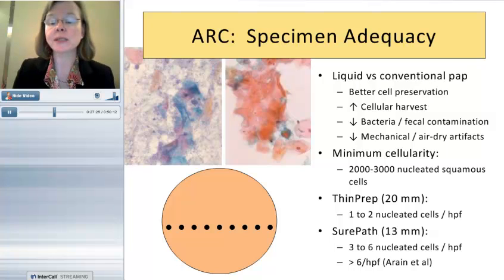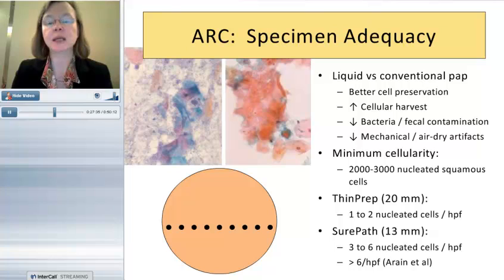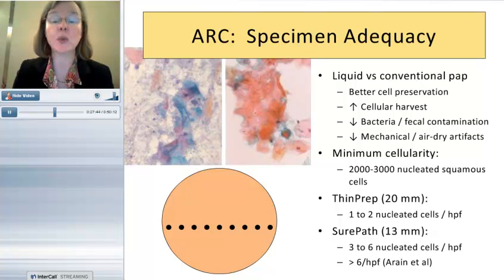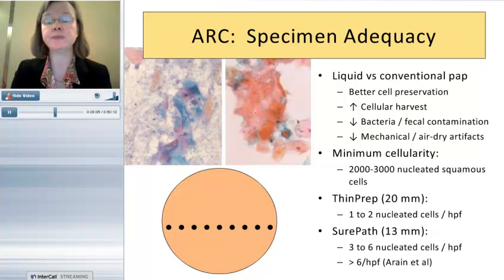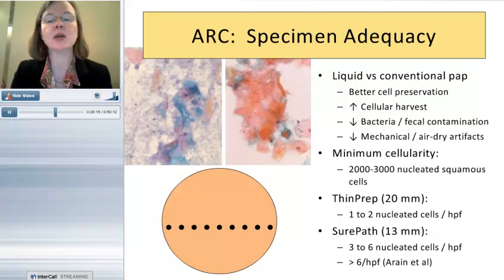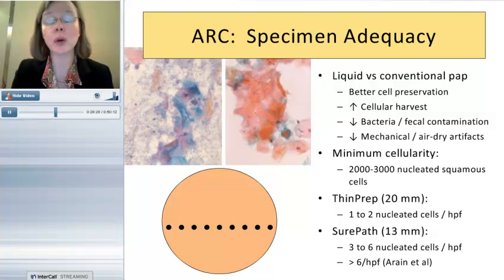We include information on interpretation, specimen adequacy, and presence or absence of anal transformation zone. The Bethesda system gives guidelines for specimen adequacy. For liquid-based cervical cytology, you want approximately 5,000 well-visualized squamous cells. For the anus, it is a little lower — 2,000 to 3,000 nucleated squamous cells — equating to 1 to 2 nucleated squamous cells per high-power field on a ThinPrep, or 3 to 6 per high-power field for a SurePath preparation.